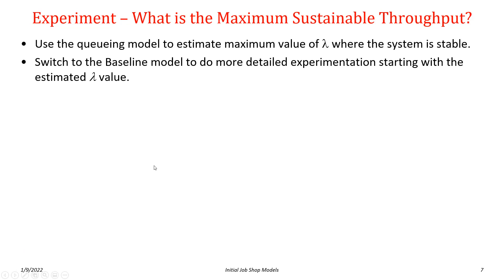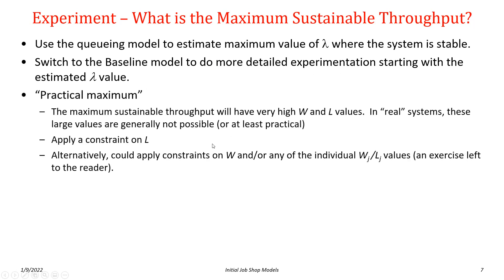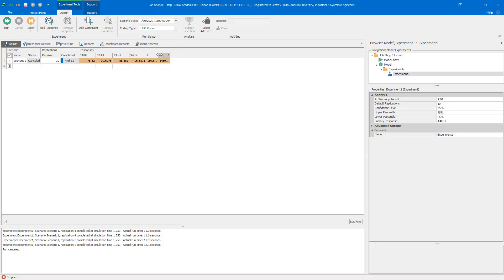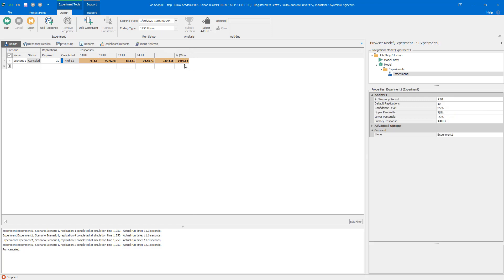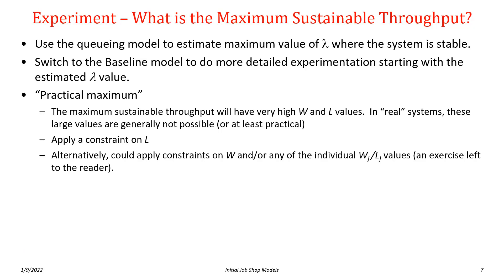The second approach uses the baseline simulation model for more experimentation. Near the maximum sustainable throughput, WIP and time in system values are very high — around 160 parts in system and 1,480 minutes time in system. While theoretically the system is still stable, in any real system these large values are generally not possible or practical — a manufacturing system would need huge physical space for that many parts.